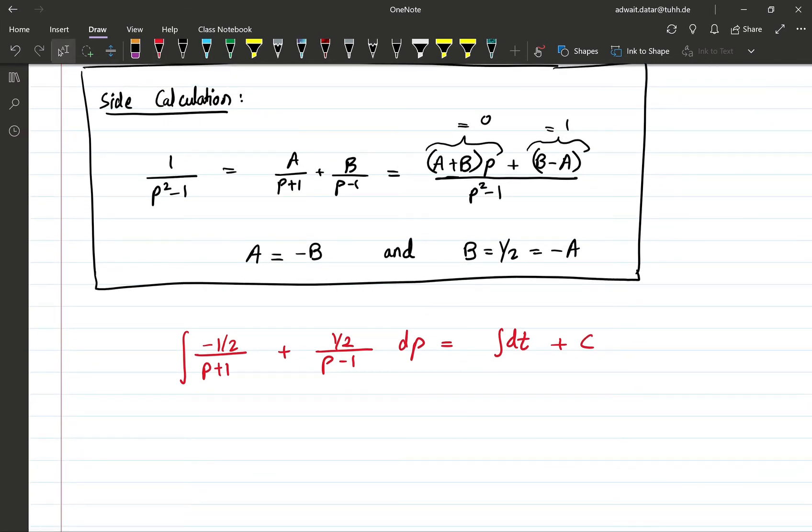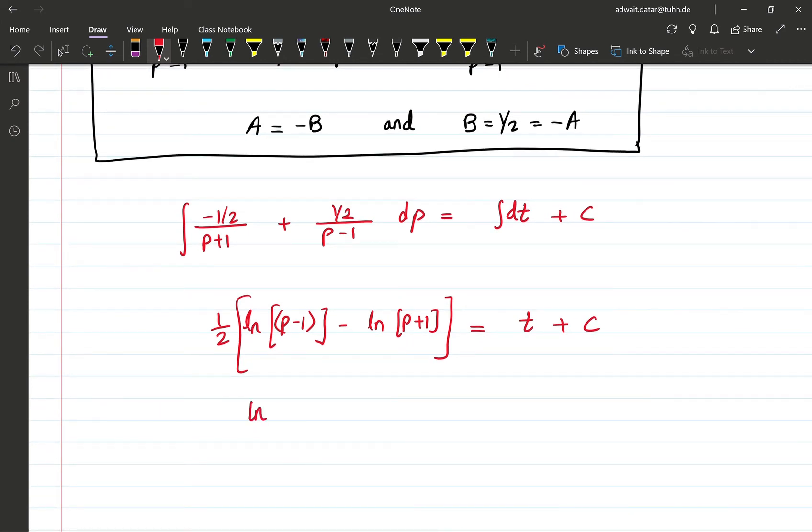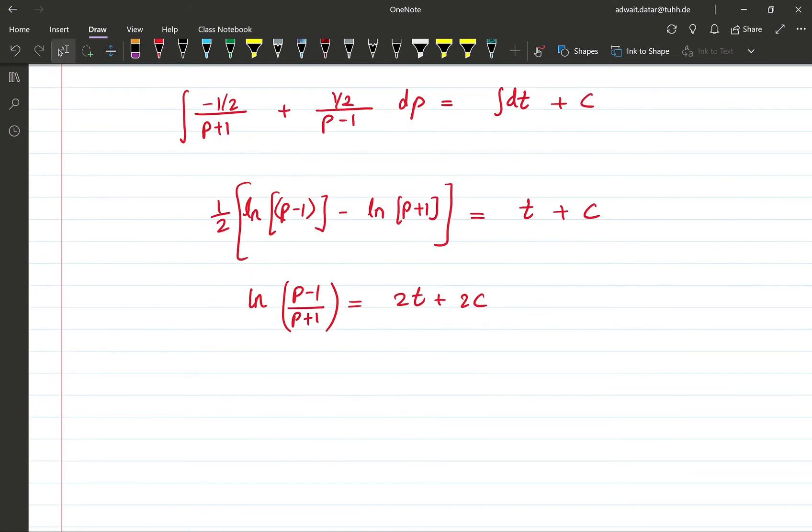Now we can integrate the left-hand side to obtain 1/2 ln(P-1) - ln(P+1) equal to t + C. That's just ln of (P-1)/(P+1) = 2t + 2C. Raising both sides to the power of e, we obtain (P-1)/(P+1) equal to e^(2t+2C), which we can write as some constant K multiplied by e^(2t).